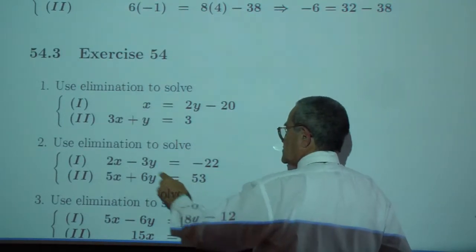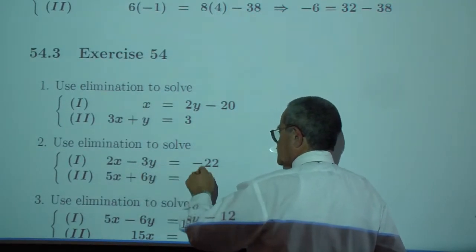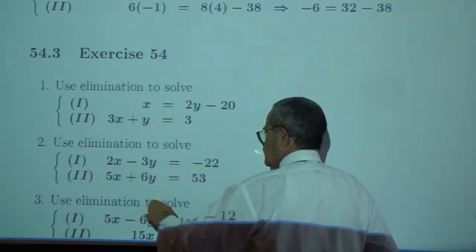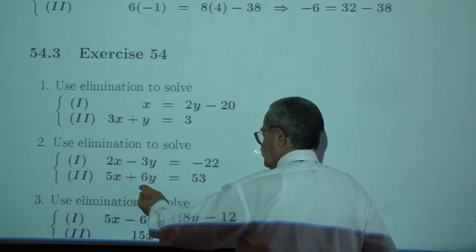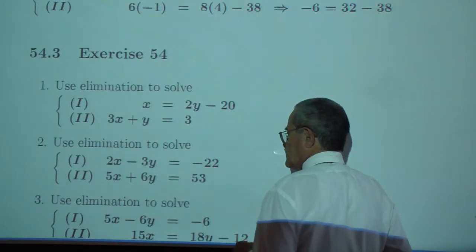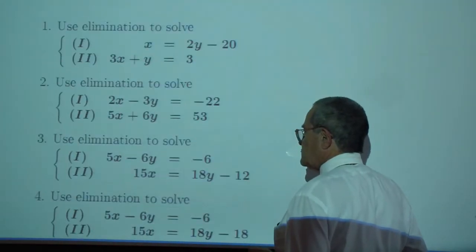Solve by elimination. 2x minus 3y is negative 22. 5x plus 6y is 53.